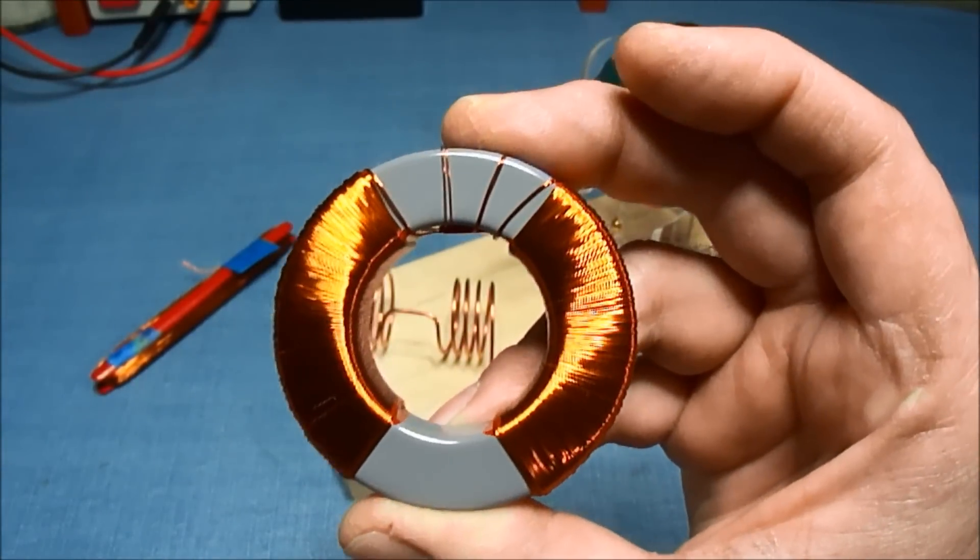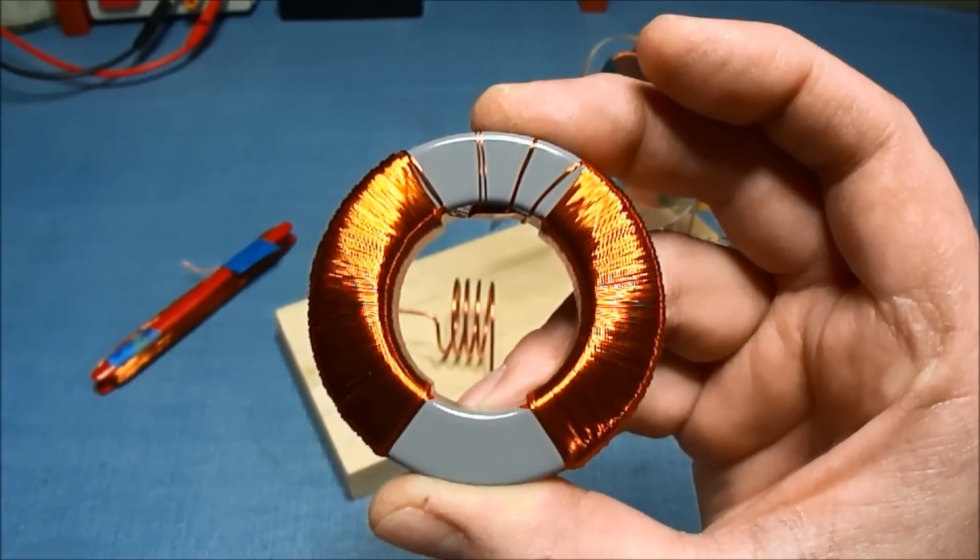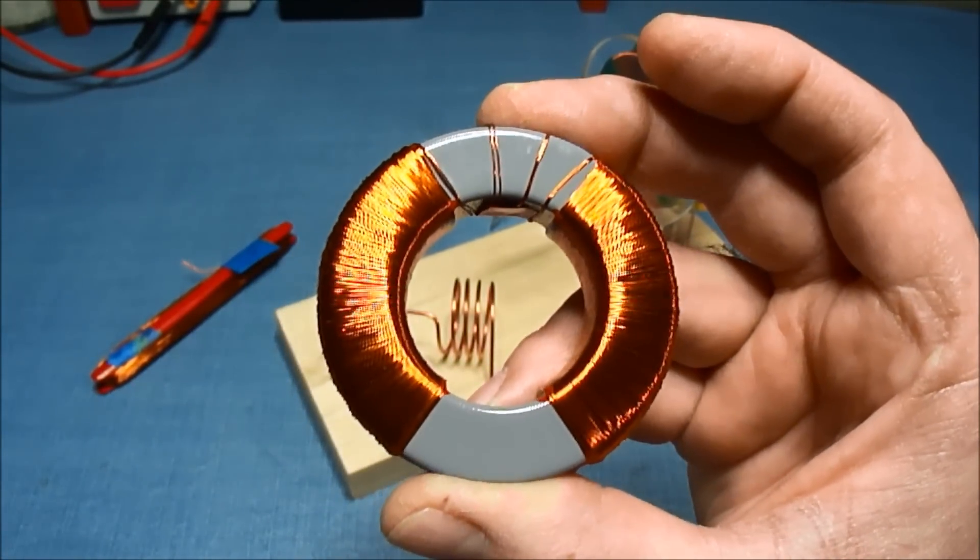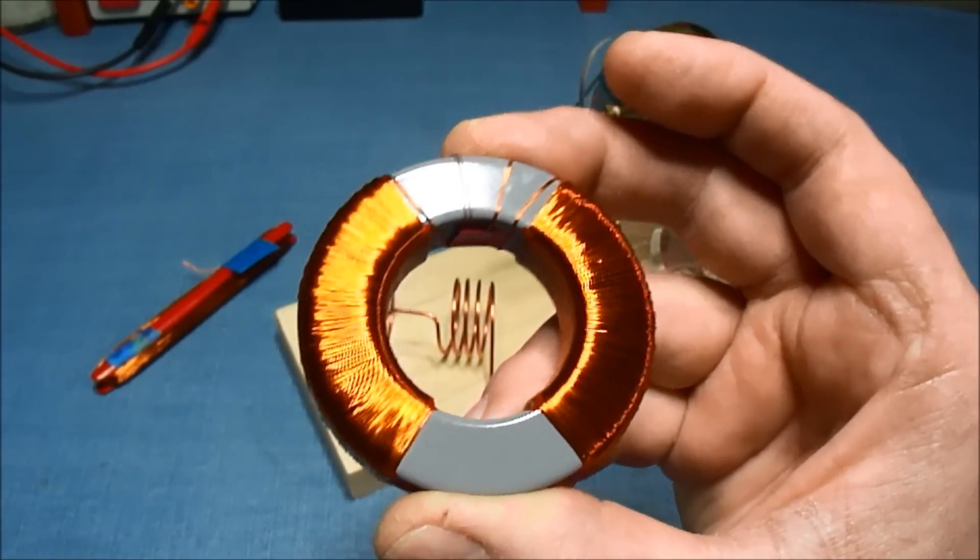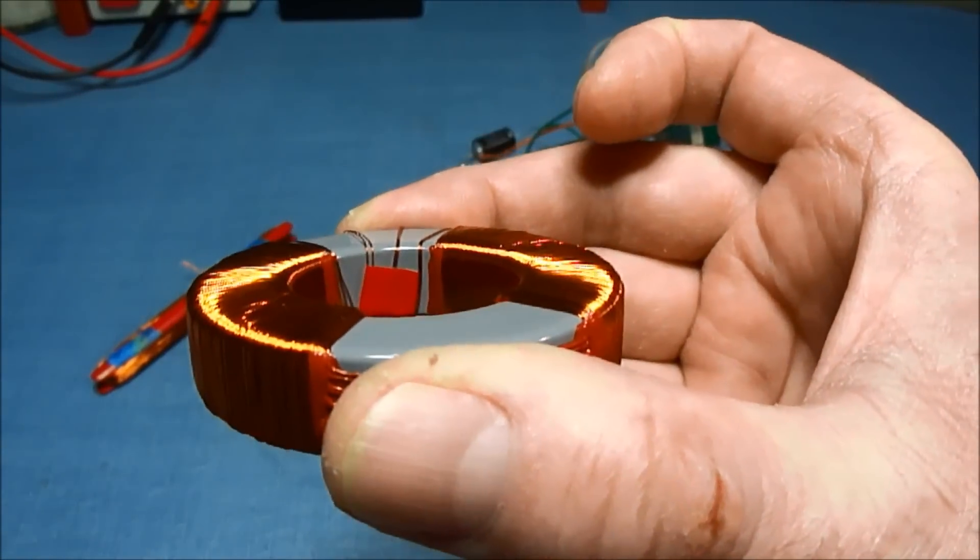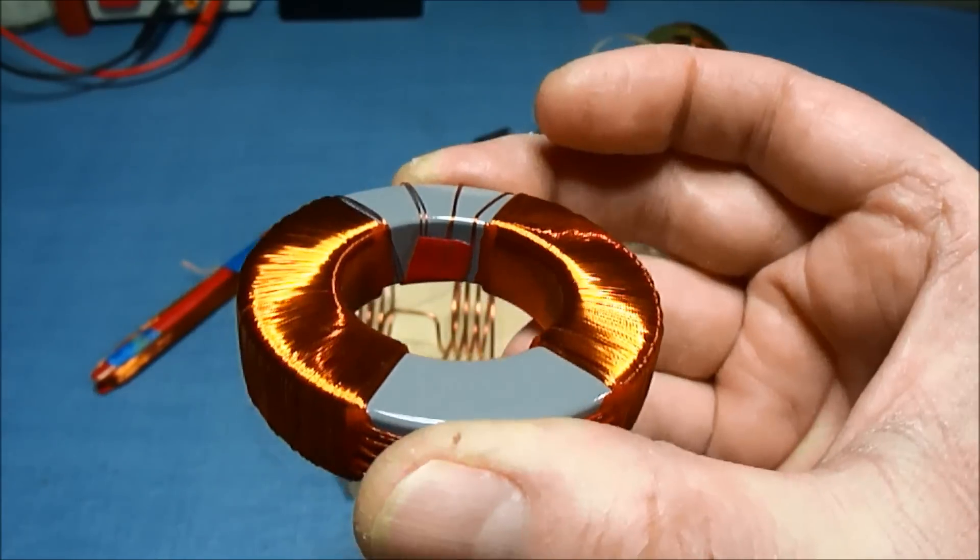When I was winding this, the bi-filer wire, I made sure that I didn't get any twists in it because that would end up in a thicker coil and I'd be further away from the magnets.